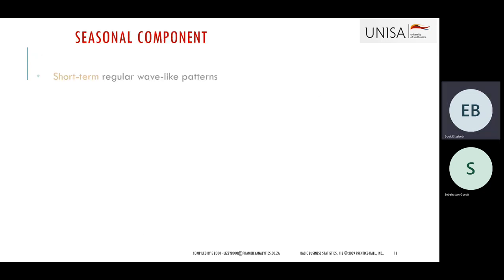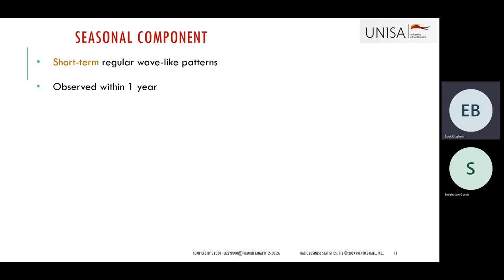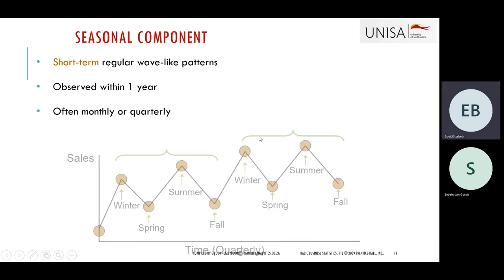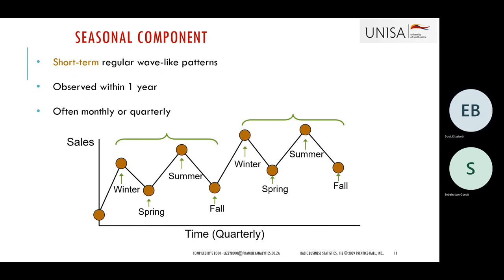In detail: a trend component shows data over a longer period — it can be an upward trend or a downward trend. Looking at our original sales data you can see it started at the top and goes down, so it's a downward trend. We can also have a non-linear trend, which can take the form of an exponential or a quadratic trend. Your seasonal component can be observed over a period of one year and often happens on a monthly or quarterly basis.